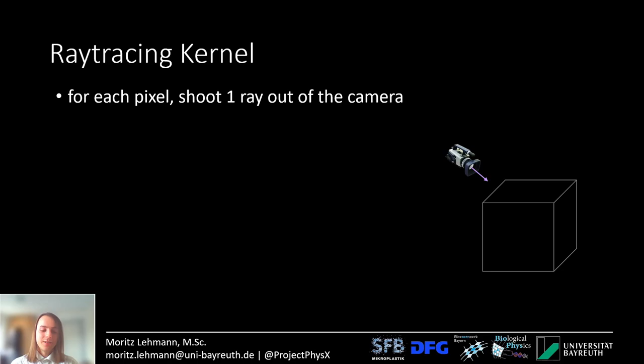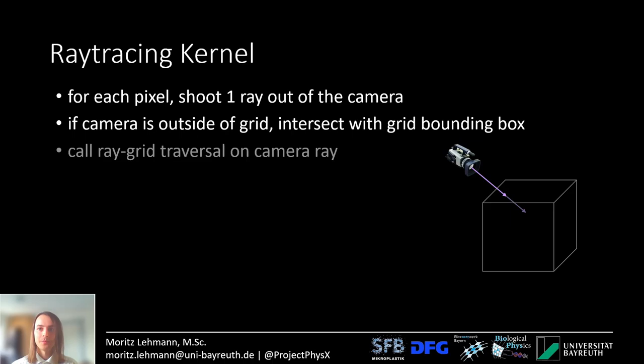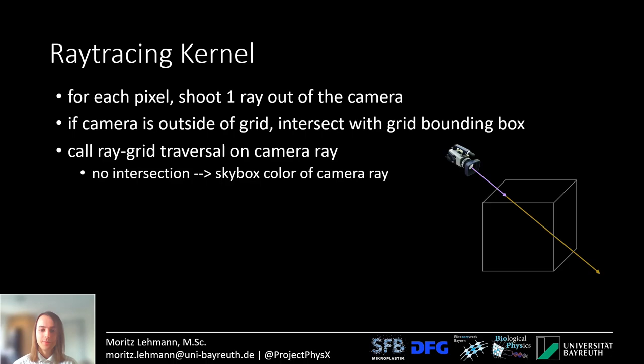Now let's look at the ray tracing kernel. For each pixel on the screen you shoot one ray out of the camera. If the camera is located outside of the simulation box, you first have to intersect this ray with the bounding box. Then you call ray grid traversal on this camera ray. If there's no intersection, the ray shoots straight through the simulation box and ends up in the skybox.